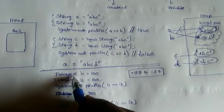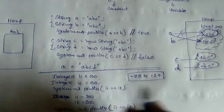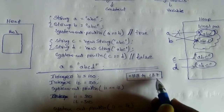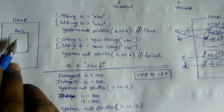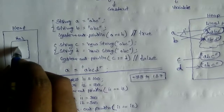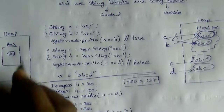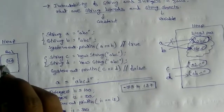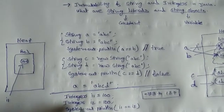Suppose we have initialized Integer i1 equal to 100. Since 100 is within the range of -128 to 127, it will go to the pool. It will search for 100 in the pool, but since it is not there, it will create 100 in the pool and give its reference to i1. So now i1 is pointing to 100.